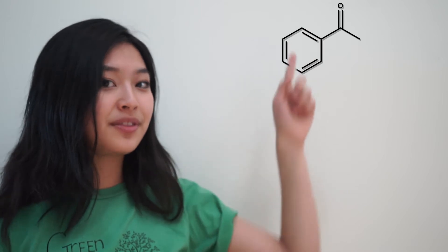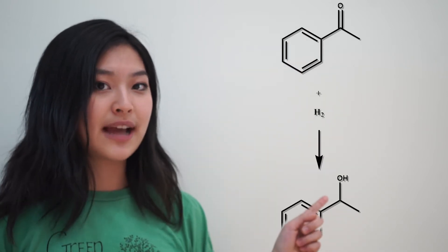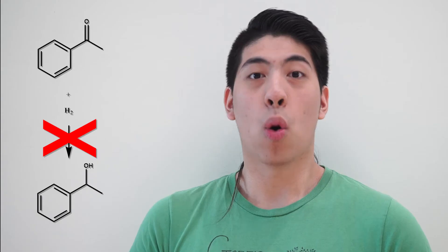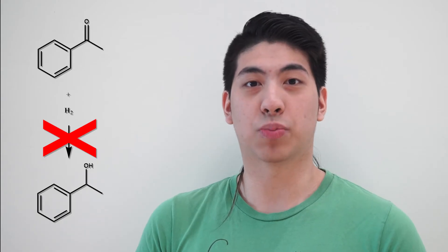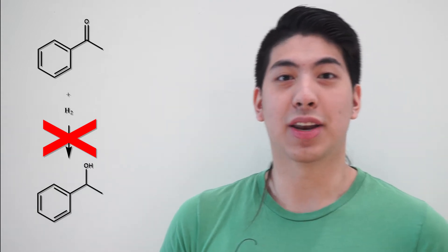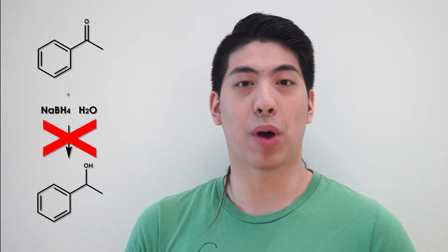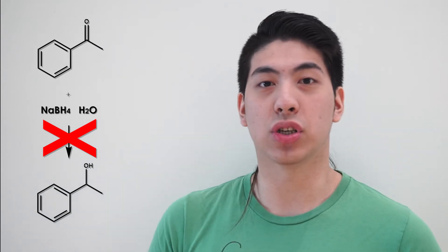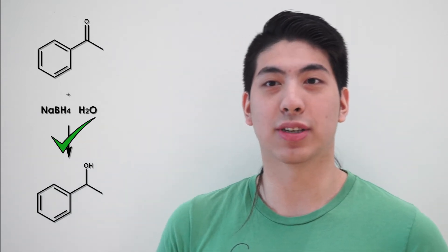To answer this question, we'll turn to an example from organic chemistry. We want to react this ketone with this hydrogen to make our desired product alcohol. However, a mixture of just ketone and hydrogen do not react with each other. One solution to this problem is to use a more reactive source of hydrogen, namely sodium borohydride followed by water. By employing this pair of reagents, we can synthesize the desired product.